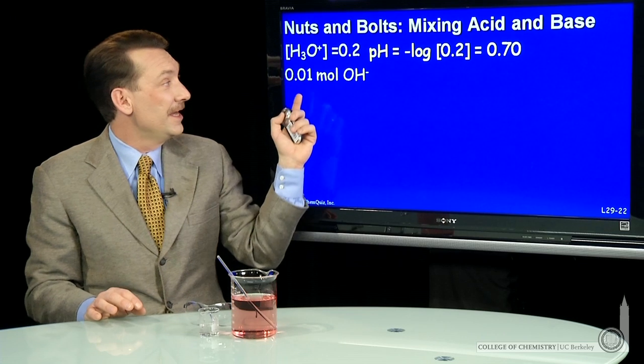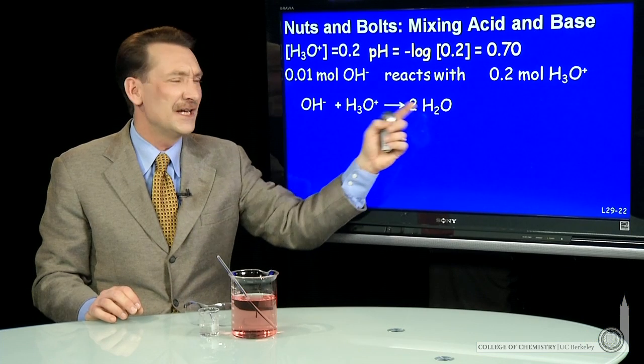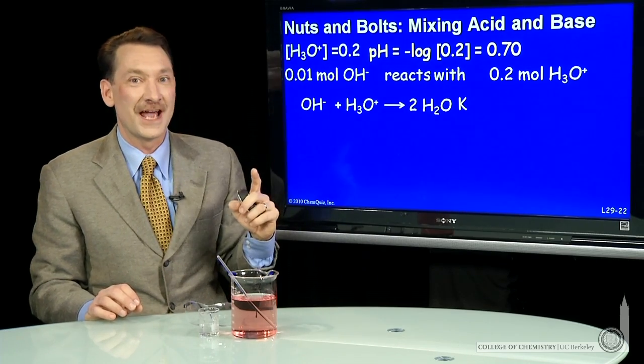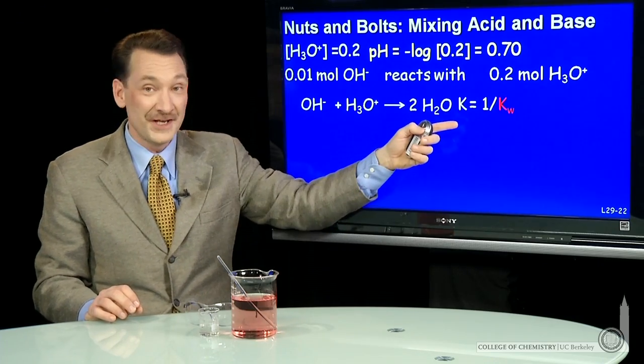So let's look at that. 0.01 moles of hydroxide ion will react with the 0.2 moles of H3O plus that's there. And I know there's 0.2 moles, because I have 0.2 molar HCl and one full liter of it. So it's 0.2 times one liter, or 0.2 moles. OH minus reacts with H3O plus to form water. How strongly does that react? Do I need to do an equilibrium calculation here? No, I don't, because the K for this reaction, the reverse reaction, is Kw. So 1 over Kw is the K for this reaction. Kw is 10 to the minus 14.